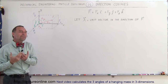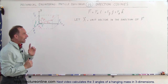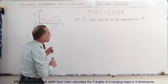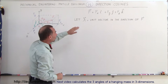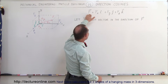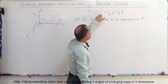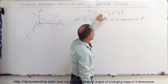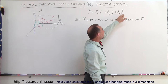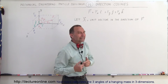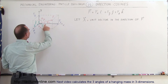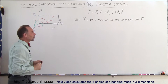So what do we mean by direction cosines? The vector can be written as follows: vector f is equal to the x-component in the x-direction plus the y-component in the y-direction plus the z-component in the z-direction, where i, j, and k are the unit vectors along the x, the y, and the z-axis.